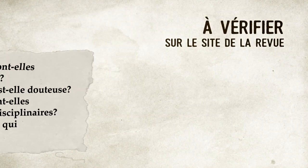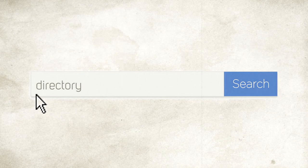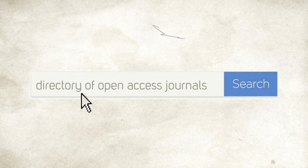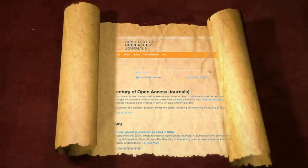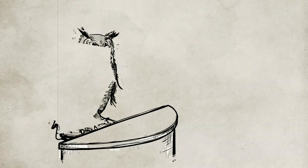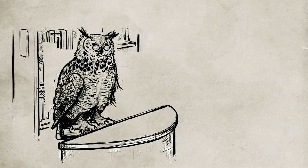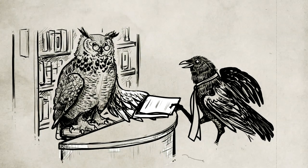Une visite sur le site web de la revue s'avérera utile. Certains outils spécialisés peuvent être utiles. Par exemple, le Directory of Open Access Journals est un répertoire des revues légitimes en libre accès. Les critères pour en faire partie sont généralement reconnus comme un gage de qualité. Demandez également l'avis de votre bibliothécaire, qui sait reconnaître les indices pour débusquer les prédateurs.